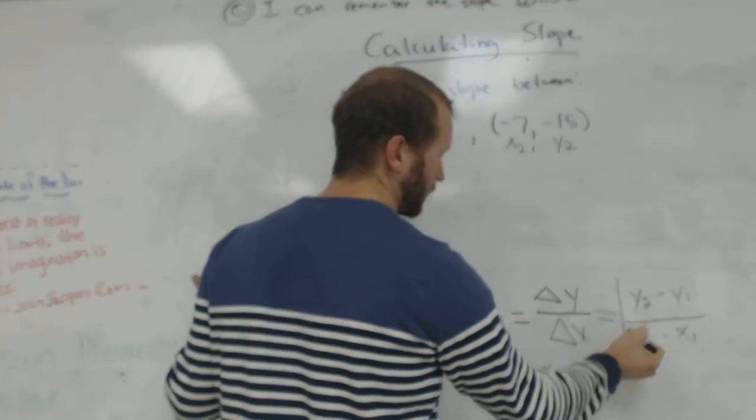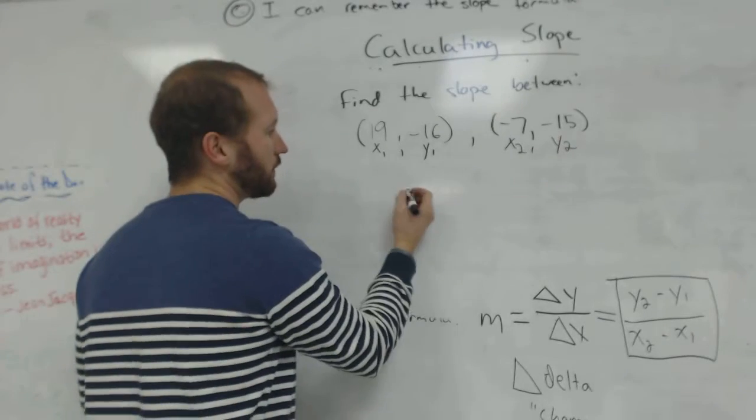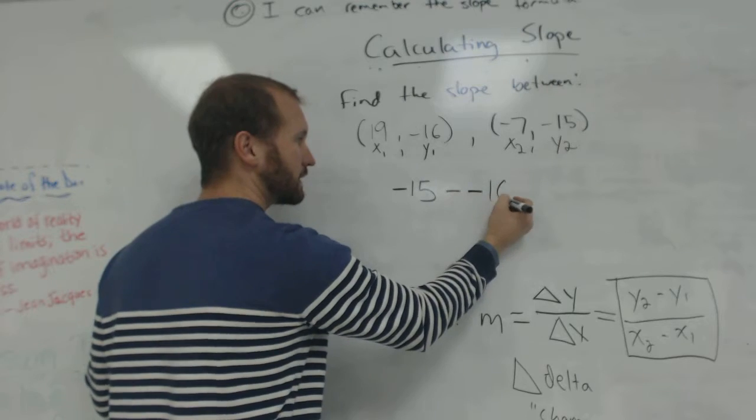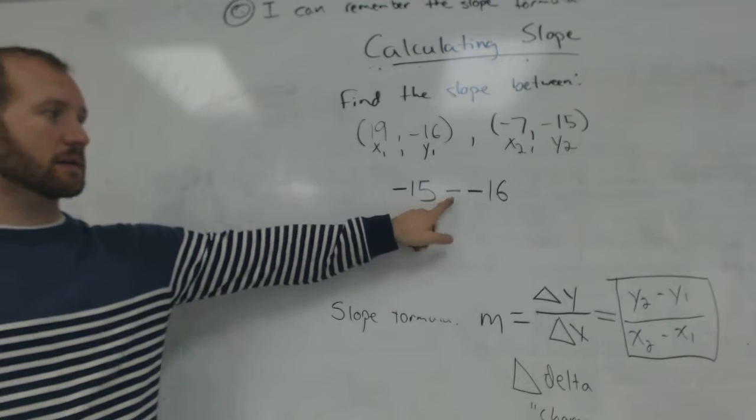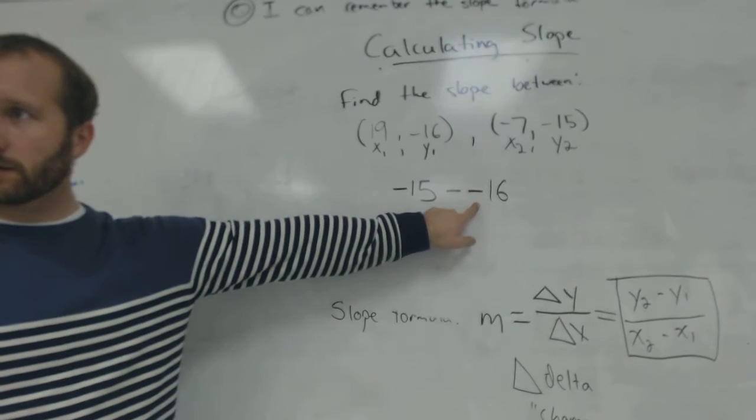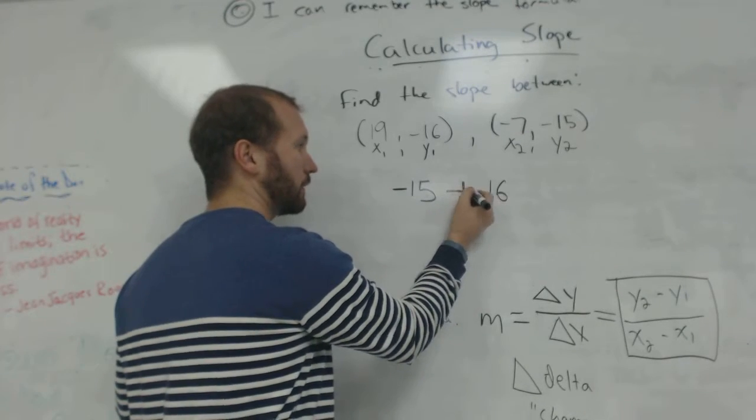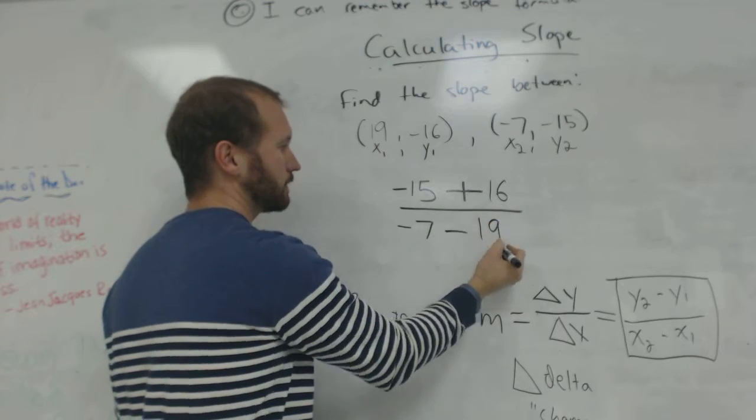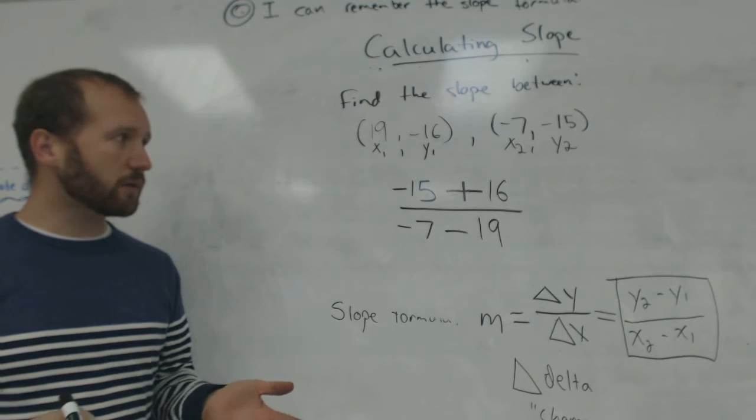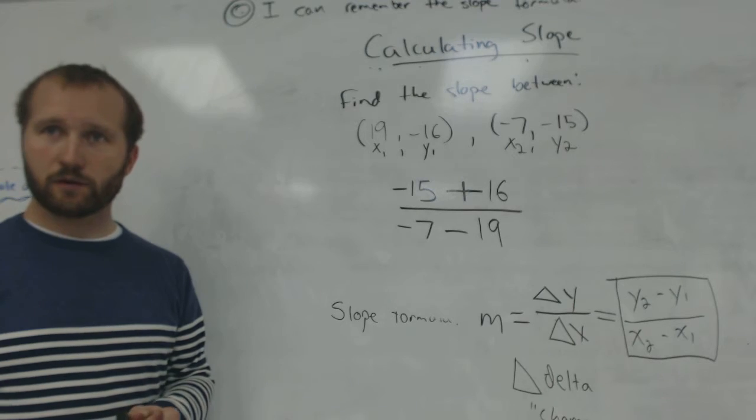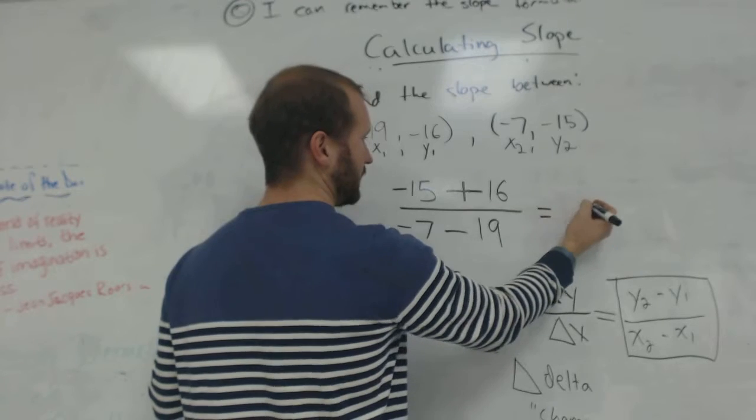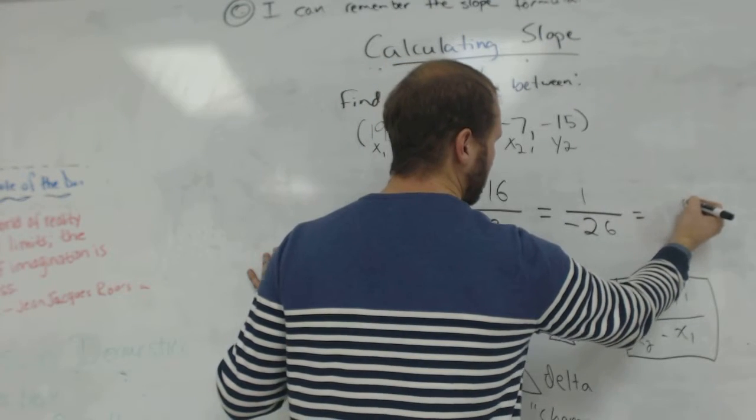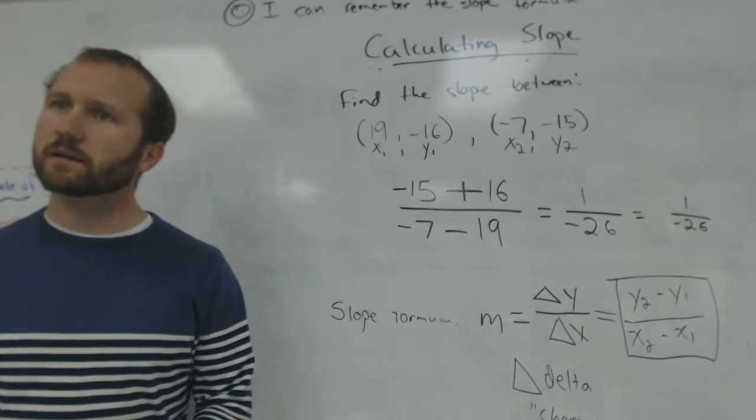So I've labeled my points. Now I'm going to use this formula right here. What is y2? Negative 15. What is y1? Negative 16. So minus negative 16. When you do this homework, you're going to get to practice this a lot. Minus a negative is? Nice. Yeah, it's plus. Over x2, negative 7, minus x1, which is 19. On your homework, if you want to use a calculator to do this, that's fine. And you may use a calculator. So you would type in negative 15 plus 16, that would give you 1. Negative 7 minus 19, that would give you negative 26. So the slope is 1 over negative 26. Or you could write negative 1 over 26, whatever you'd like.